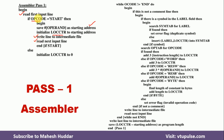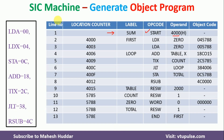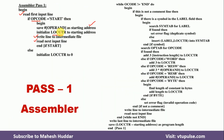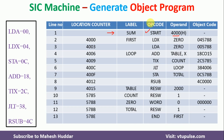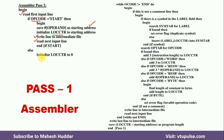So first we read the first line. If the opcode is equivalent to START, we get the operand value — that operand is the value of the location counter and it is the starting address. Now there is another possibility: the opcode may not be equivalent to START; sometimes this line may not be present. In that case, we initialize the location counter to 0.